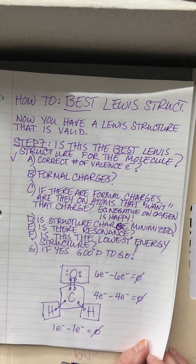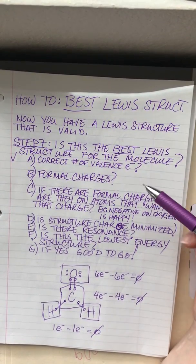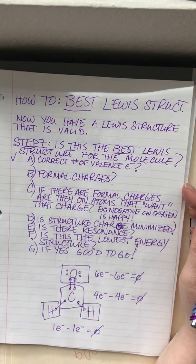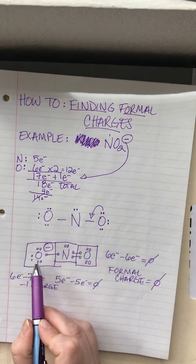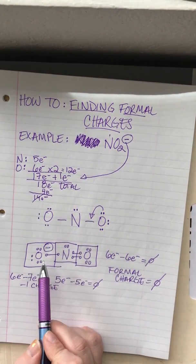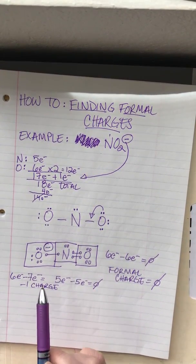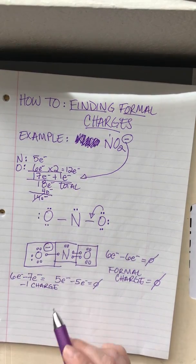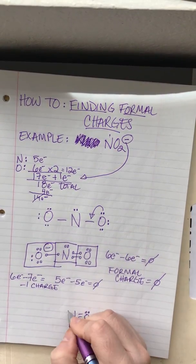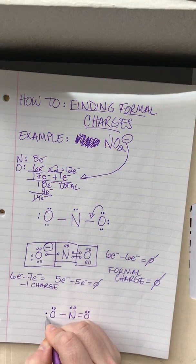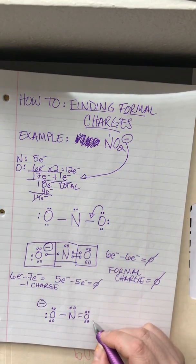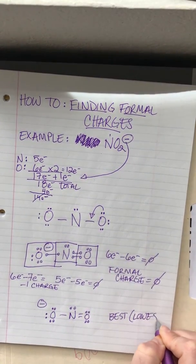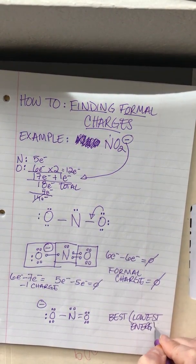Once we've determined if there are formal charges, we ask: are those formal charges on the atoms that want that charge? Oxygen is a very electronegative atom, which means it really likes having negative charges. Since nitrogen is less electronegative than oxygen, oxygen would prefer to have that negative charge. This is the charge arrangement that gives the lowest energy structure.